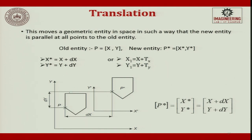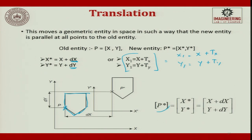Here we have taken an object — this full object, maybe a pencil or an inverted hut in 2D. I try to take a reference point and say move by delta x in the x and delta y in the y. When I do that, I apply a transformation matrix. The new point x1, y1 is nothing but x plus tx and y plus ty. When represented in matrix form, P* is x* y*, which is x+dx, y+dy.